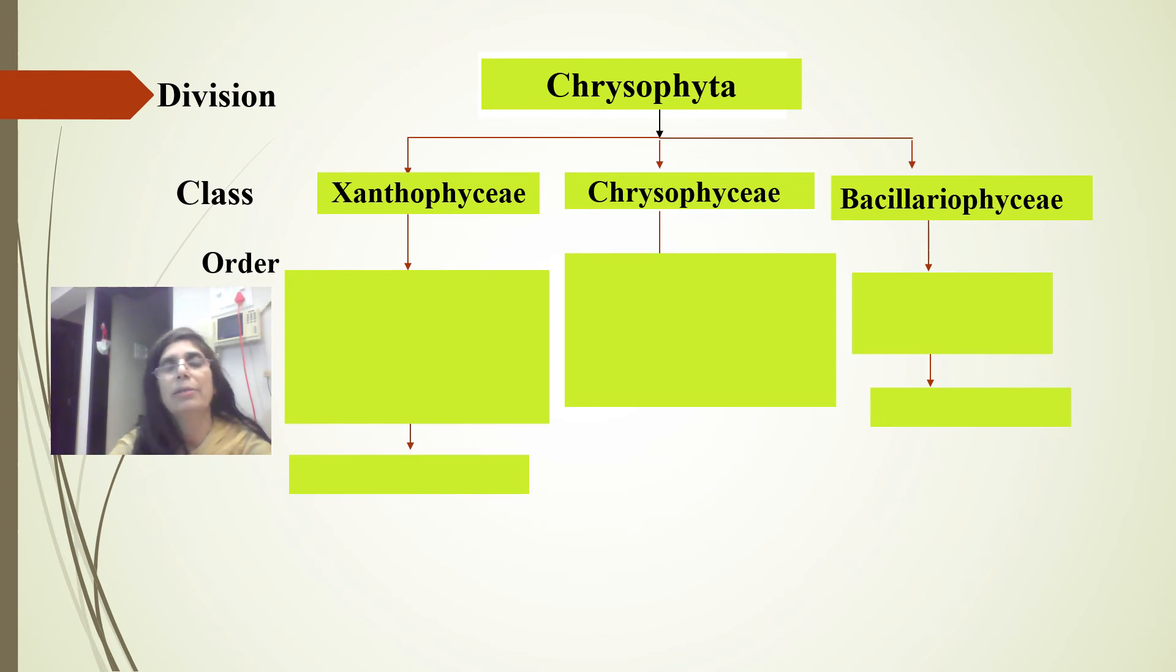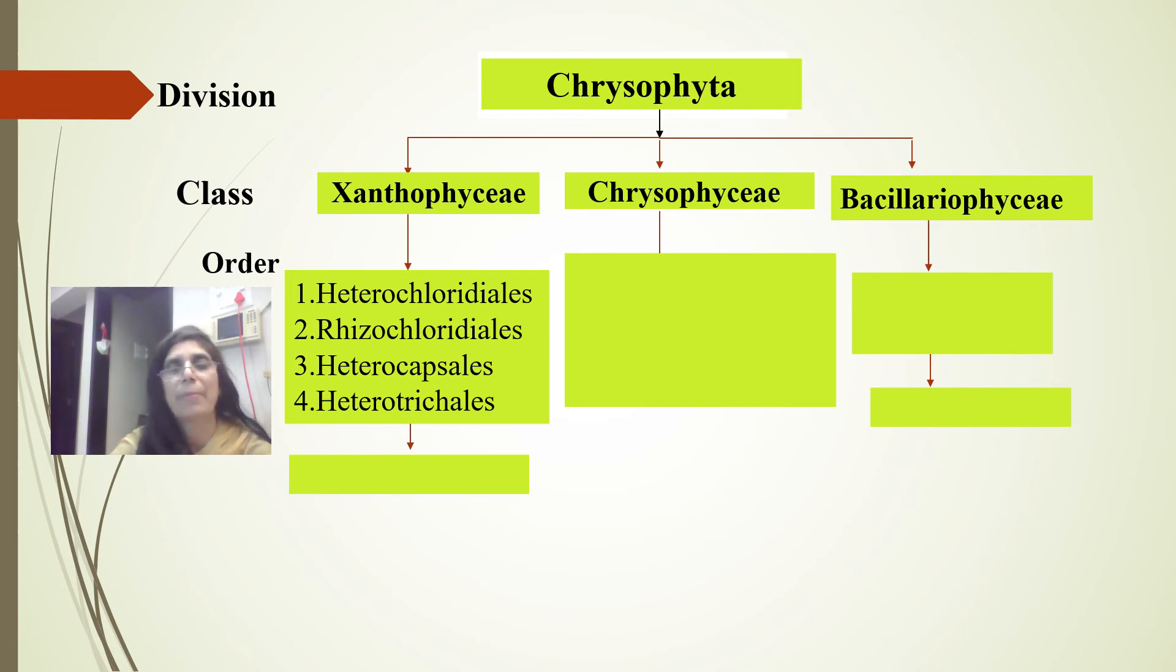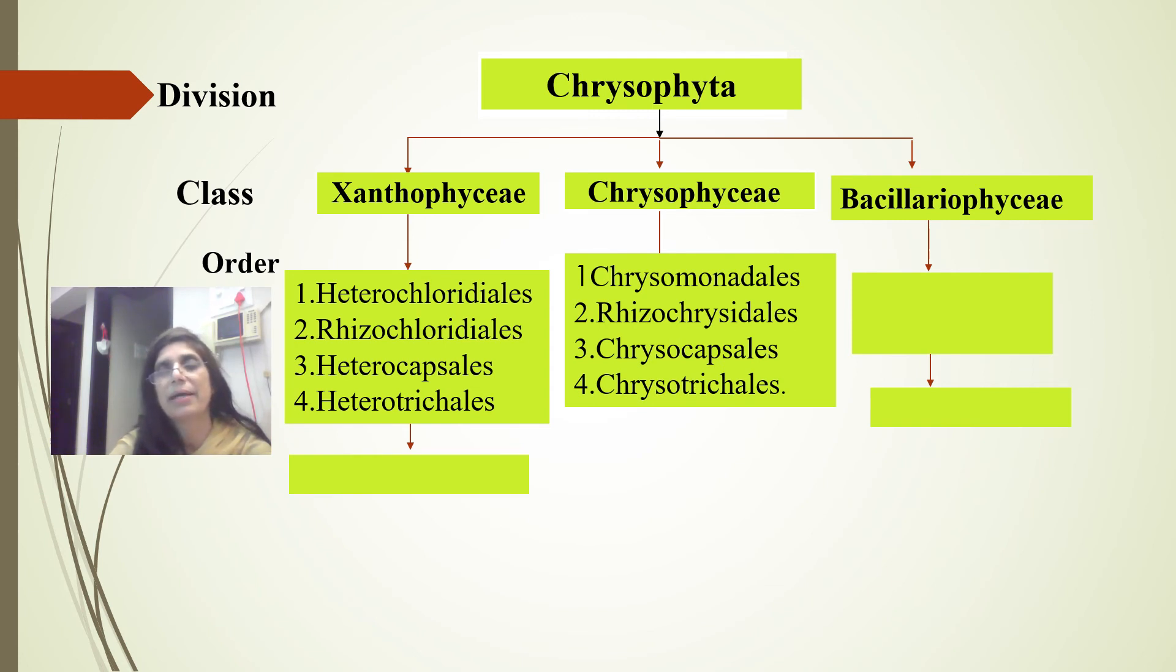In Xanthophyceae, he included four orders: Heterochloridales, Rhizochloridales, Heterocapsales, and Heterotrichales. In Chrysophyceae, he included again four orders: Chrysomonadales, Rhizochrysidales, Chrysocapsales, and Chrysotrichales.